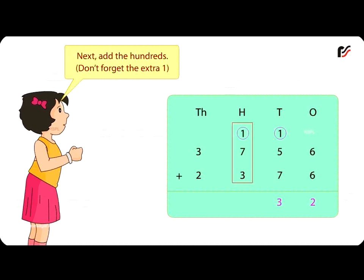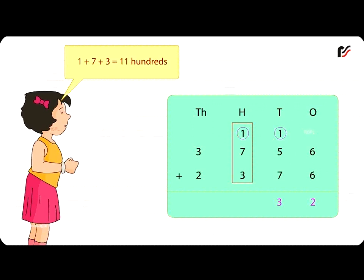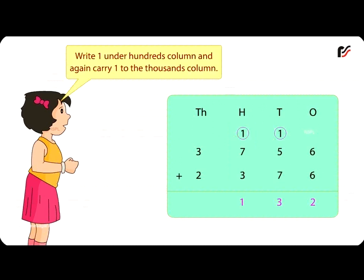Next add the 100's. Don't forget the extra 1. 1 plus 7 plus 3 is equal to 11 100's. Write 1 under 100's column and again carry 1 to the 1000's column.